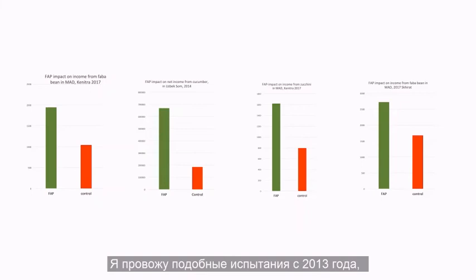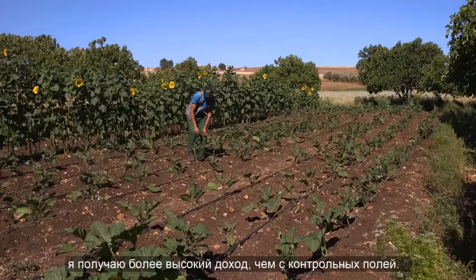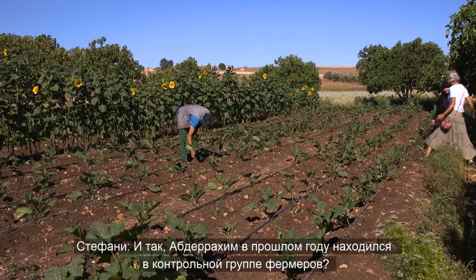I have been doing this trial since 2013 — it's the sixth year now — and each year the FAB fields have a higher income than the control fields. Last year Abdi Rahim was a control farmer in a pumpkin trial. The habitat enhancement plants also contributed to income. But the yield of eggplant was amazing. A high number of flowers produced fruit. On average, FAB fields had 40% more eggplant fruits than control fields in the same area. The main difference was also size. The net income from FAB fields was more than double that of control fields.